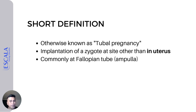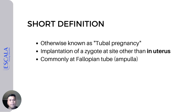When we say ectopic pregnancy, this is otherwise known as tubal pregnancy. What happens in ectopic pregnancy is that the implantation of a zygote does not happen in the uterus. Normally, the zygote implants inside the uterus, located at the fundus or the higher part of the uterus. Unfortunately, there are instances where a zygote implants outside the uterus — the condition we call ectopic pregnancy. Commonly, it implants in the fallopian tube, specifically in the ampulla, a specific portion of the fallopian tube.